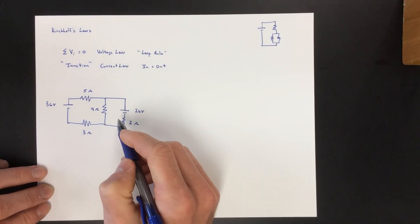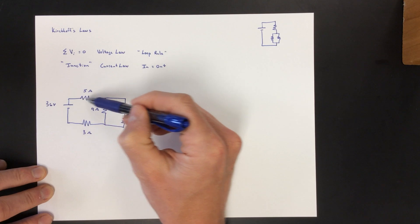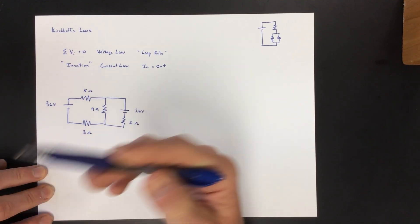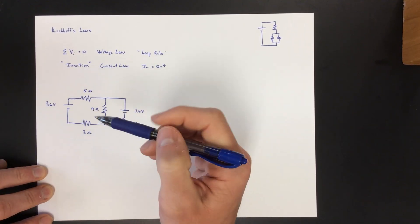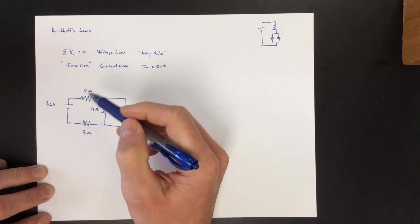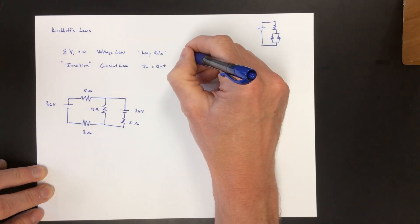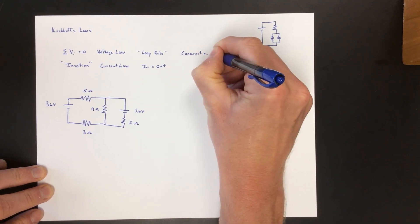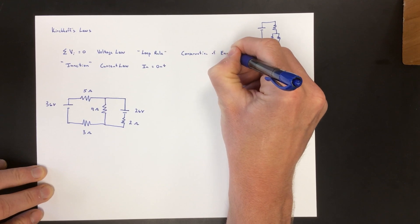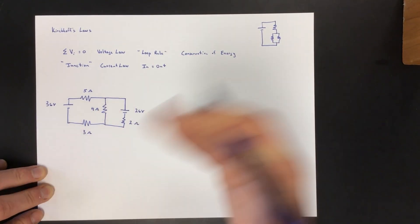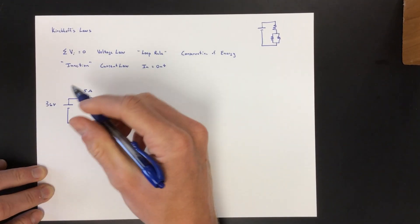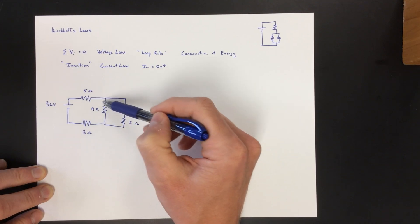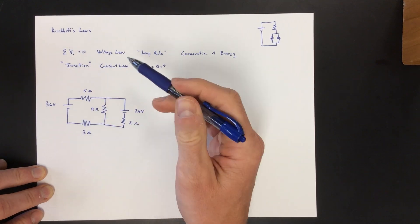So now we have multiple loops. We have the medium loop, the small loop on the right side, or the big loop. The sum of all the voltages around any loop has to equal zero, and it's really a conservation of energy idea. We're getting energy from a battery, and then we're dissipating energy over these resistors, and the dissipation and the gains all have to be balanced.